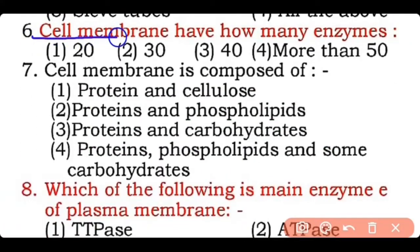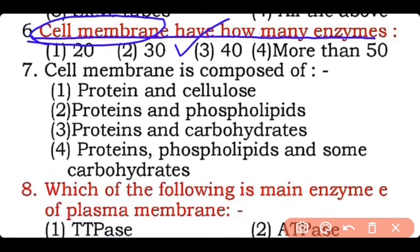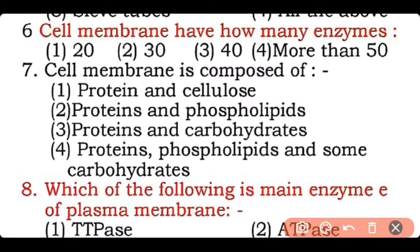Question 6: Cell membrane has how many enzymes — 20, 30, 40, or more than 50? Correct answer is option two — the cell membrane has almost 30 different enzymes.